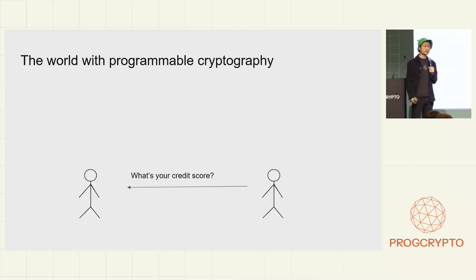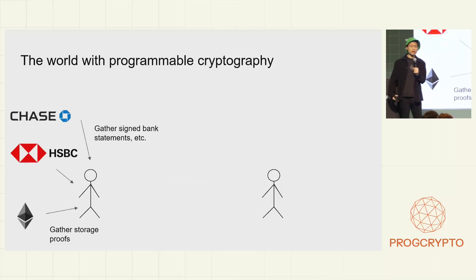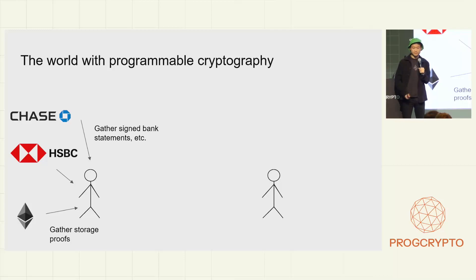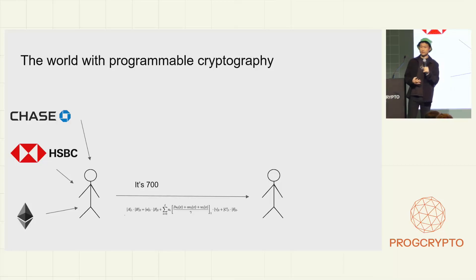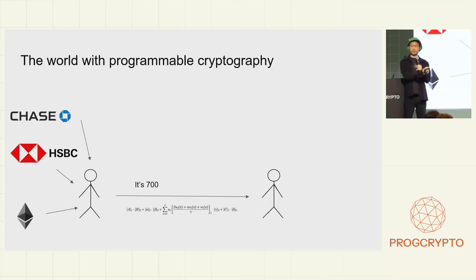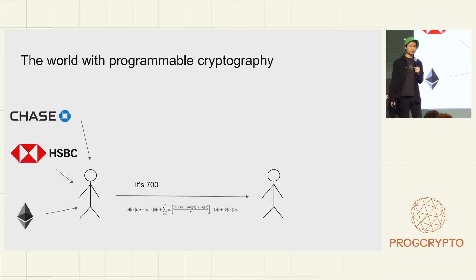Let's take the more complicated example again. The party on the right is a financial service provider asking, 'What's your credit score?' In this model with programmable cryptography, the party on the left would gather a bunch of data — on-chain data, off-chain data, like a signed bank statement from Chase, or a storage proof from Ethereum about financial activity over the last couple of months. They crunch that data, do some programmable cryptography on it, and generate a response: 'The answer is 700, and here's a cryptographic artifact showing I got that data from Chase, HSBC, Ethereum, and ran the public financial model you expected on it.'